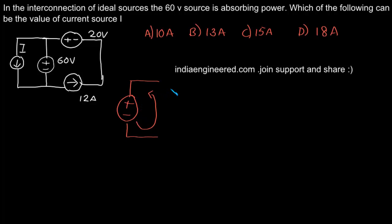Now by knowing this, when we look at the circuit, the 60 volt source is absorbing power so some current has to flow in this direction. That means the source is absorbing power. Now we have 12 ampere in this direction.